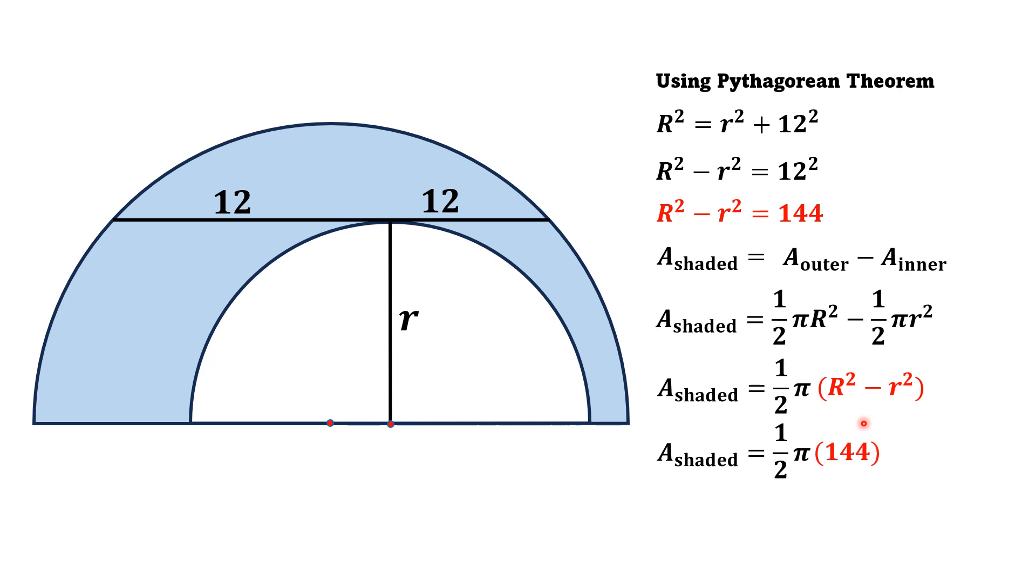Substituting this value, we get (1/2)π(144), and after simplification, the area of the shaded region is 72π square units. That is the answer. Thank you for watching.